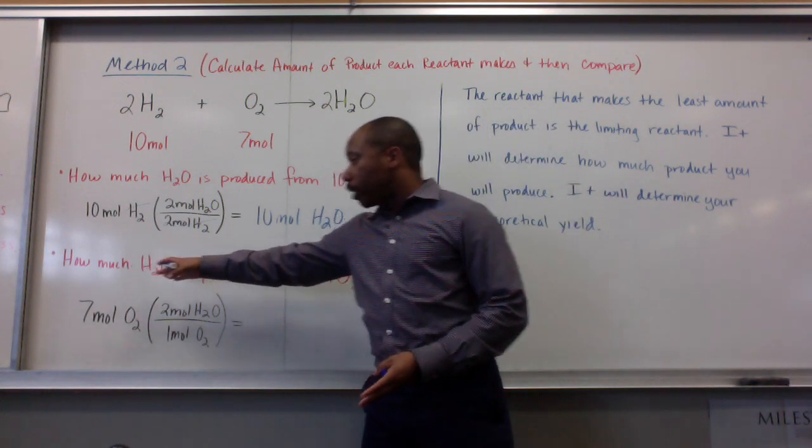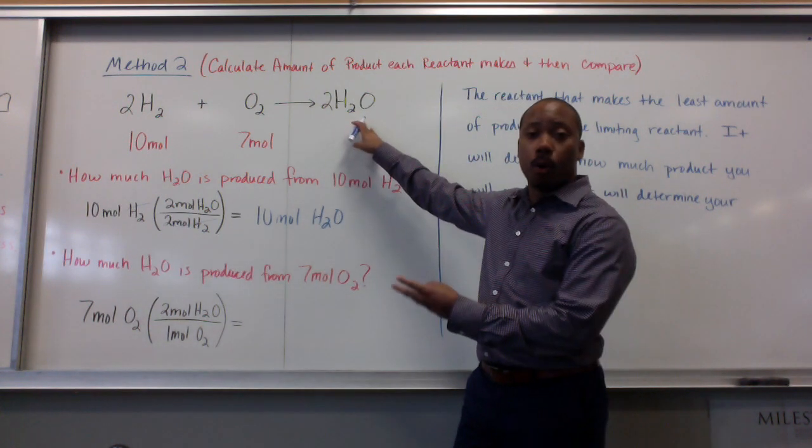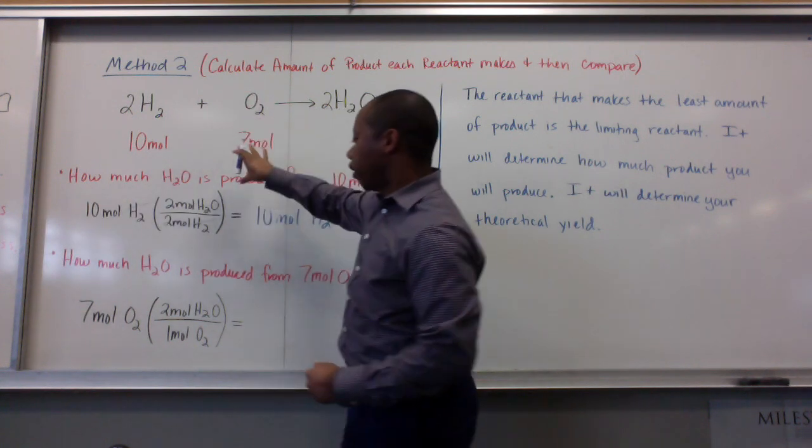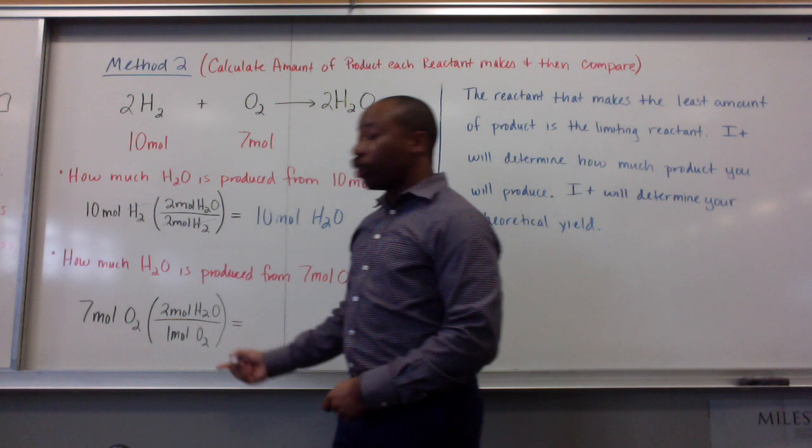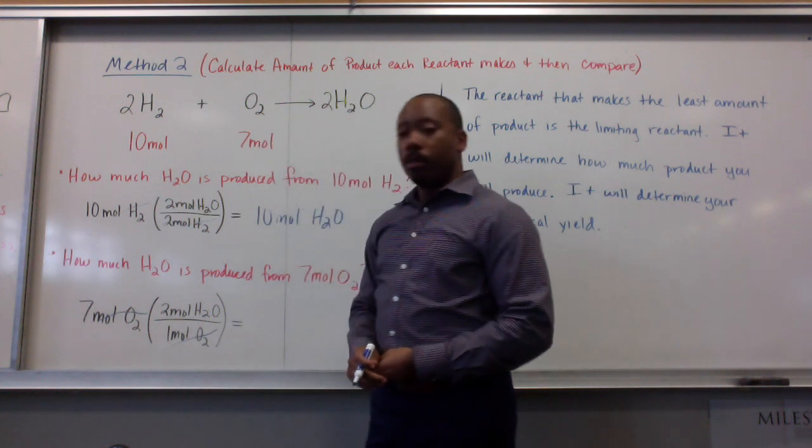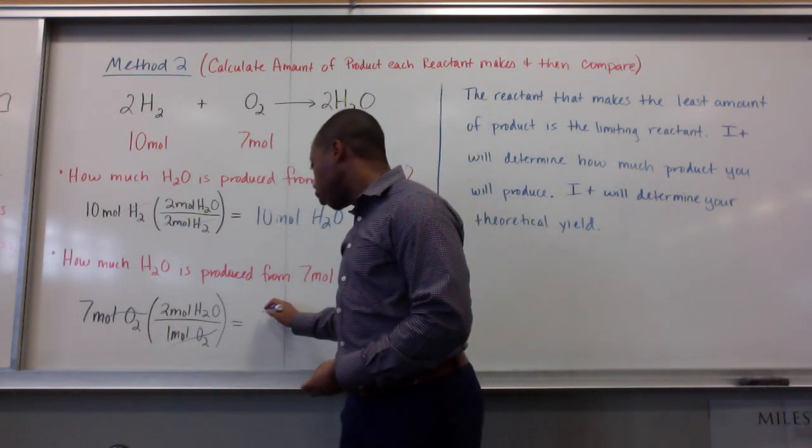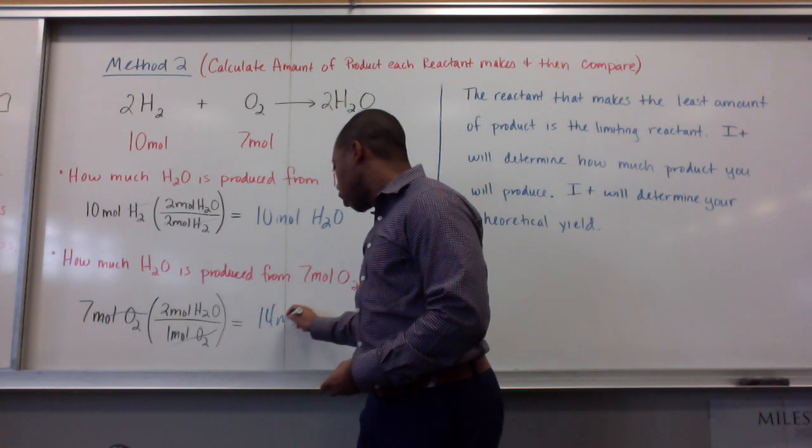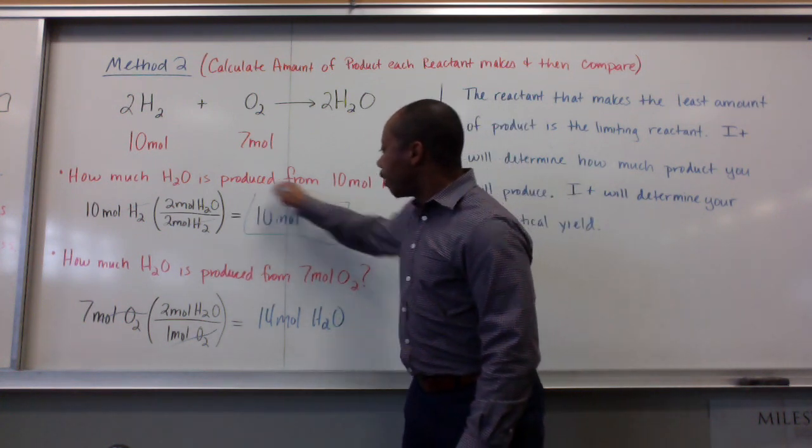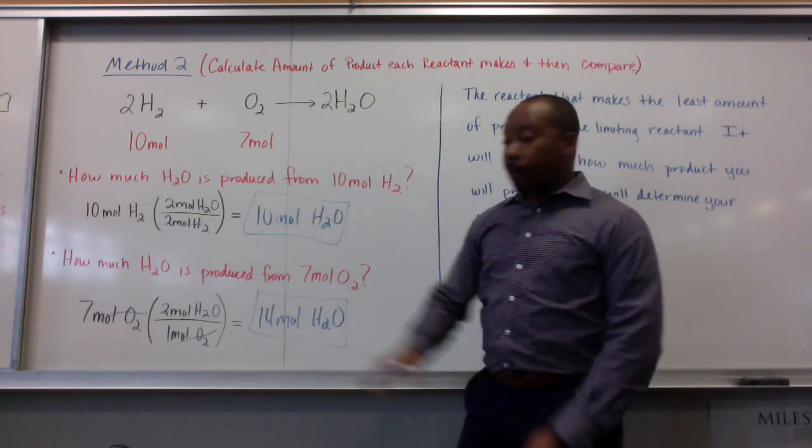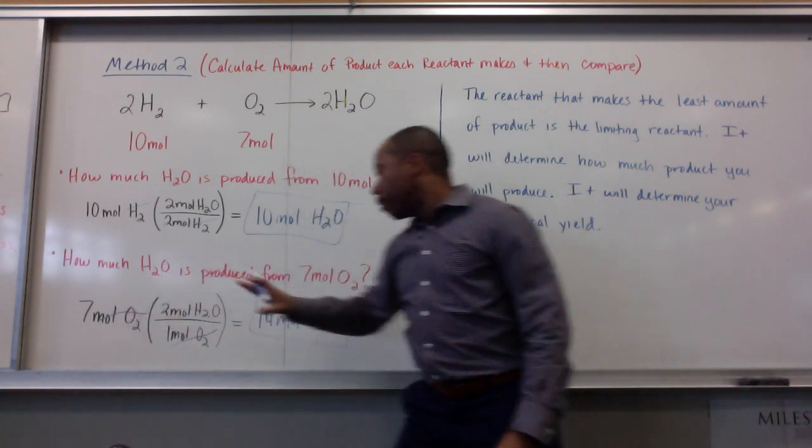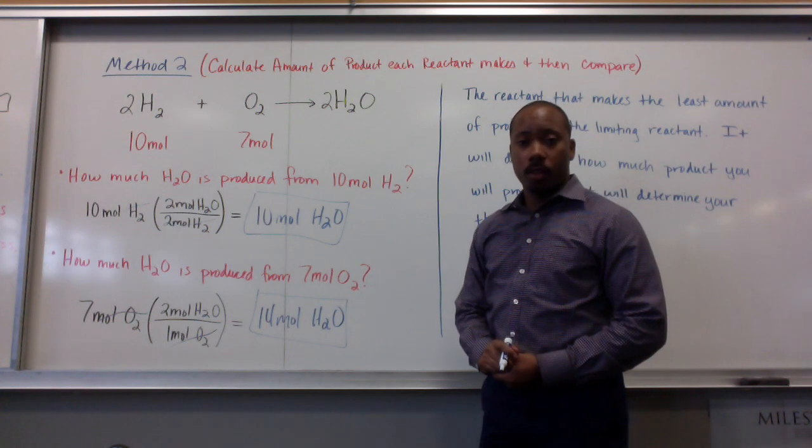So, the next one we do is, how much H2O is produced from 7 moles of oxygen gas? So, from this reactant, first perspective, that reactant, now we're going from this reactant. So, 7 moles of O2 over the mole ratio between water and oxygen gas. Moles of O2 cancel, I have 7 times 2 moles of H2O, so that's going to be 14 moles of H2O. Now, we compare these two numbers that we've gotten. 10 moles of H2 can make 10 moles of H2O. 7 moles of O2 makes 14 moles of H2O.